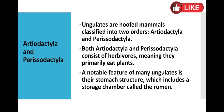A notable feature of many ungulates is their stomach structure, which includes a storage chamber called the rumen. The most interesting thing about Artiodactyla and Perissodactyla is their stomach — they have multiple stomachs, which is why we call them ruminants. Animals like camels and cows have a storage chamber where they can store food and utilize it when proper food is not available.